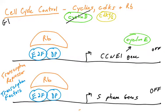Cyclin D's function, as you recall from the previous video, is to bind its partner cyclin-dependent kinases, either CDK4 or CDK6 — drawn here together as CDK4/6. But in G1 phase, cyclin D is not present, so these kinases CDK4 and 6 are not active. Cyclin E, when it is present, is able to bind a cyclin-dependent kinase called CDK2 and activate it.